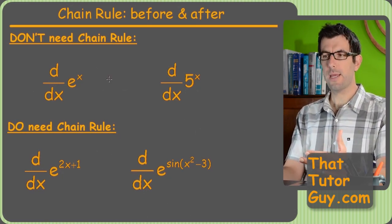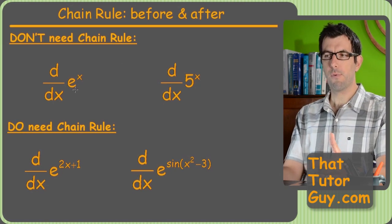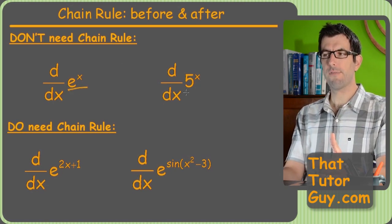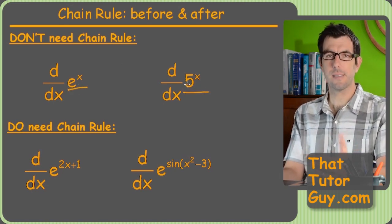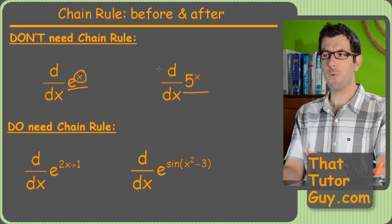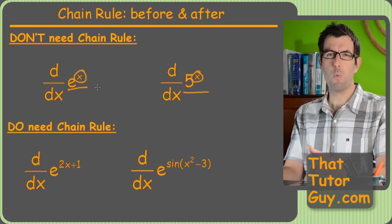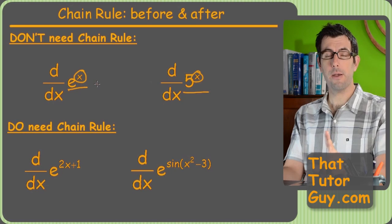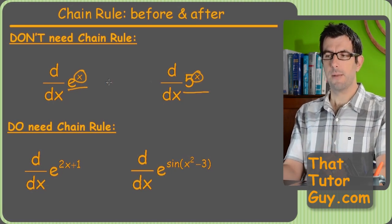All right, so last one we're going to look at, exponentials. Before, it was always just e to the x, or 5 to the x, or a number to the x. The point is the exponent had to be x. Or it could have been y or something, but it had to be a single letter without any exponents on it.